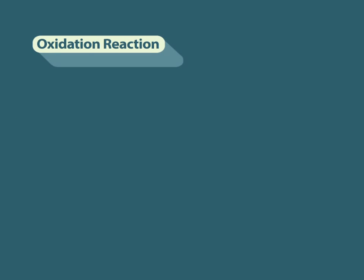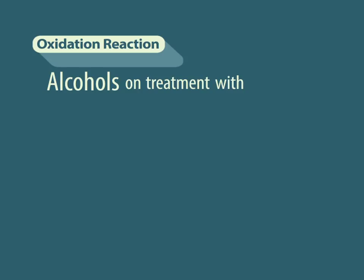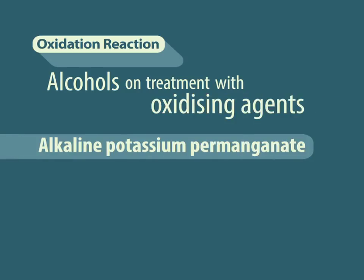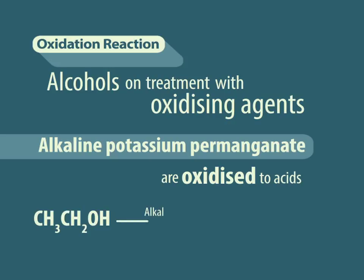Oxidation reaction: Alcohols on treatment with oxidising agents like alkaline potassium permanganate or acidified potassium dichromate are oxidised to acids. For example, ethanol when treated with alkaline potassium permanganate is oxidised to acetic acid.